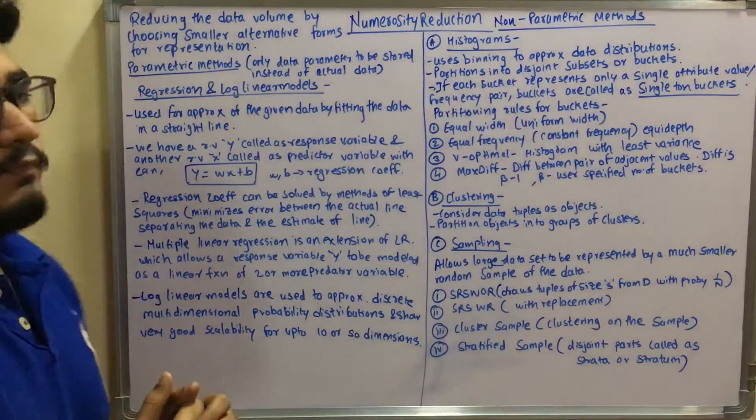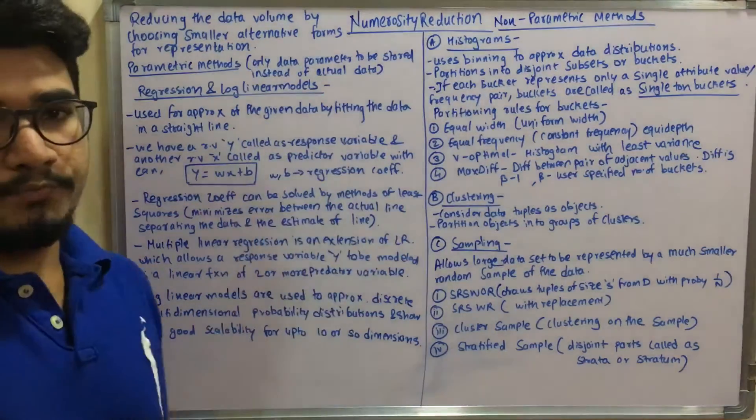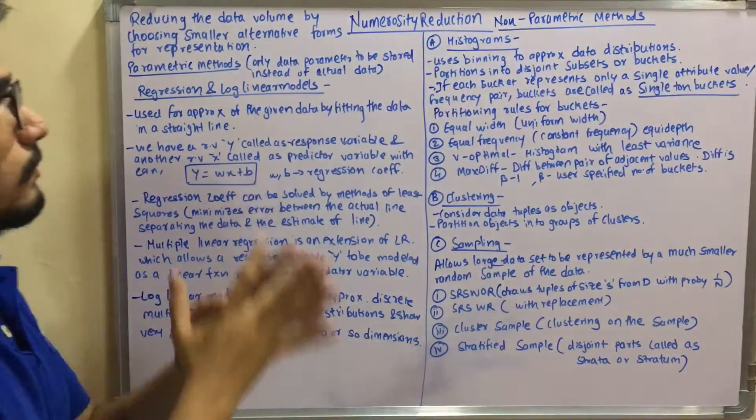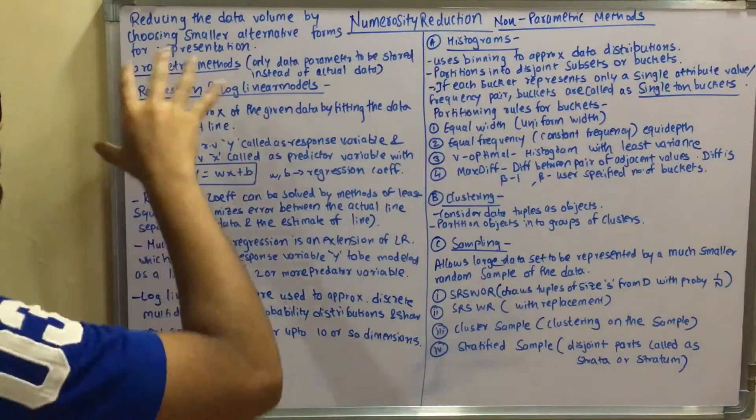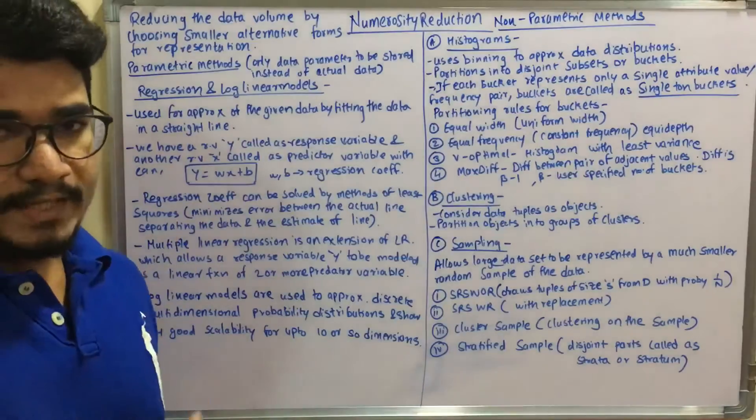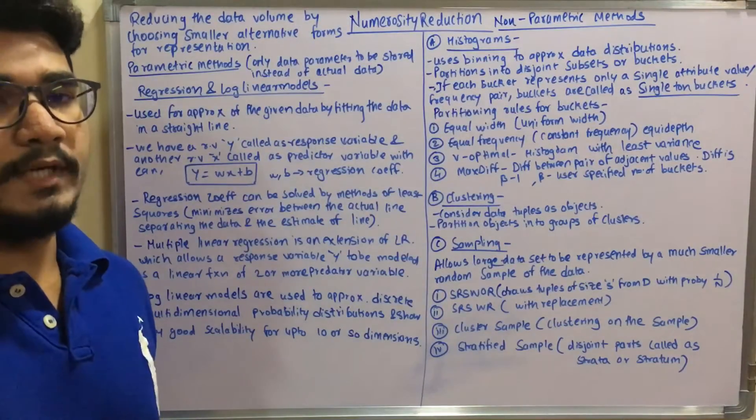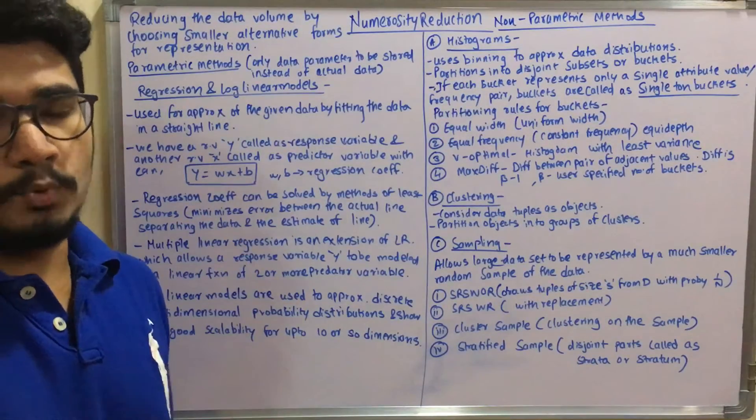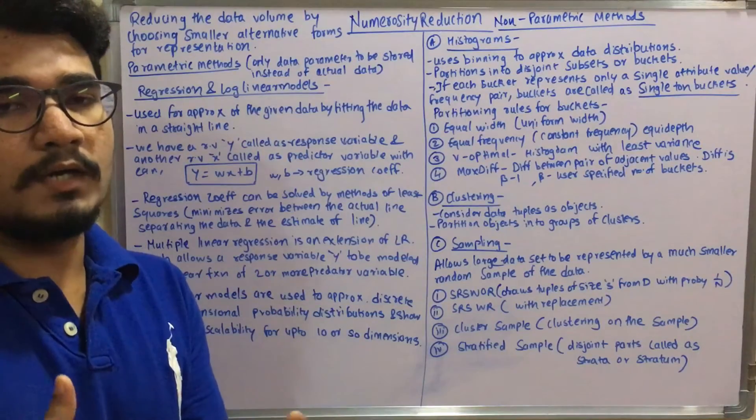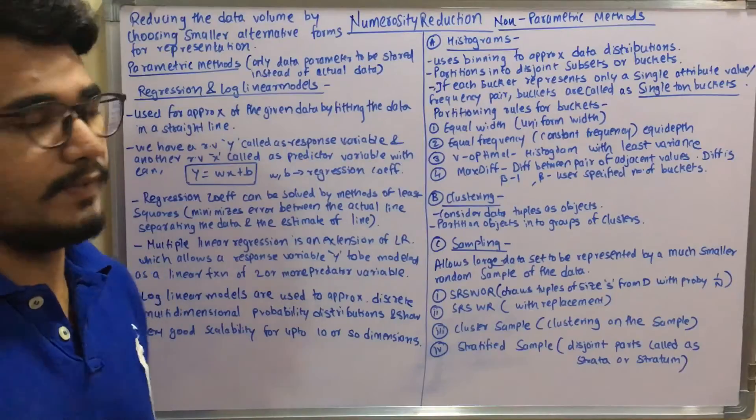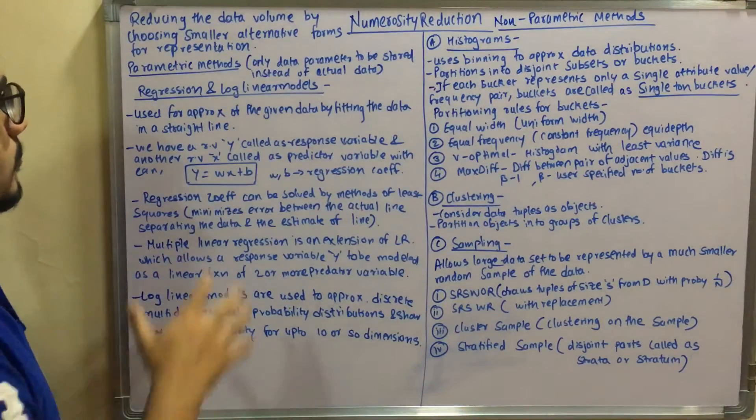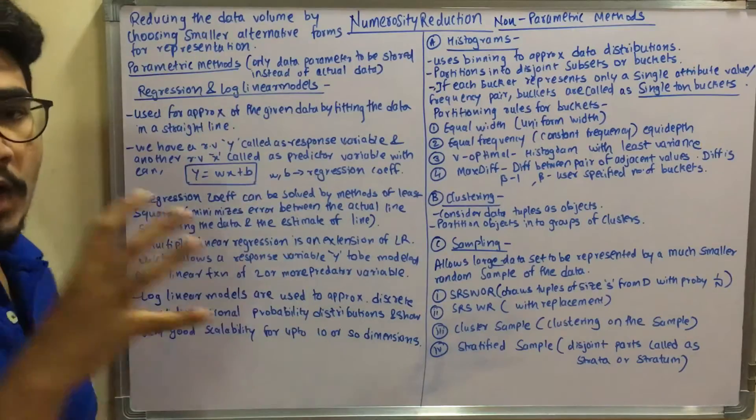So to begin with, for numerosity reduction, we have two different methods. First we have parametric methods and we have non-parametric methods. So we'll move to the LHS. Parametric methods only store the data parameter and not the actual data. So it's like you just need to feed the input parameters and not the actual data, so it would not be burdening your entire process of data mining activity for reducing the data.